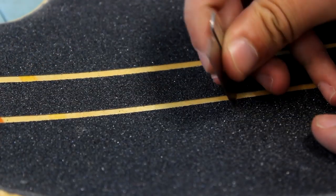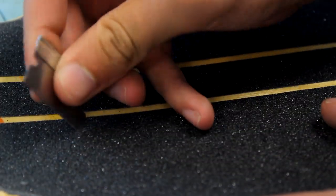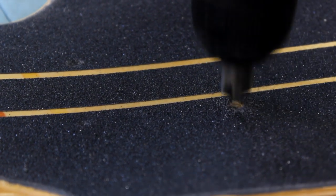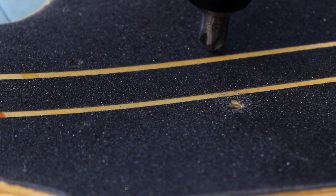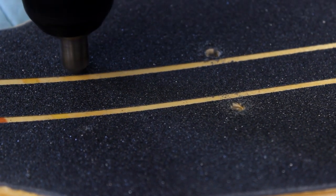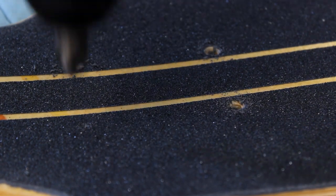The last step to grip taping your board is cutting the holes for the bolts which mount the trucks to the deck. I use my razor to make holes in the grip tape where my hardware will go. Next I use a drill with a countersink bit to clean up the holes.